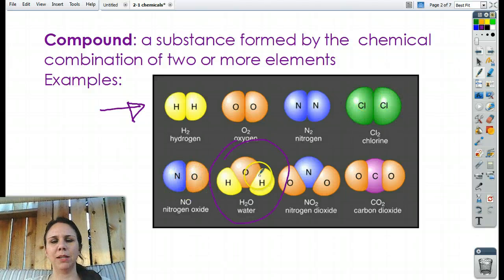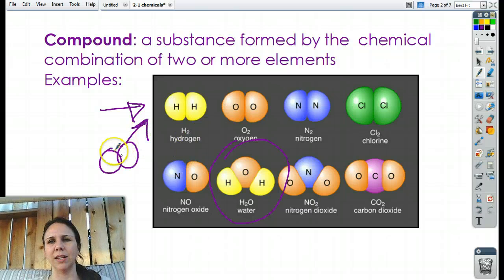Nitrogen oxide, bad stuff. Water, good stuff. Nitrogen dioxide, not that great. CO2, good for plants, not so good for us. So you can see, by taking individual atoms and then smooshing them with other atoms, we get all sorts of neat stuff like this.